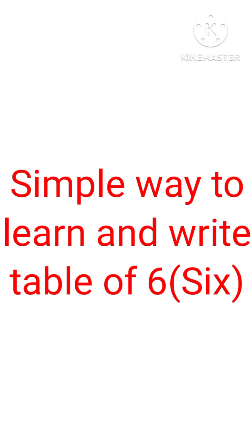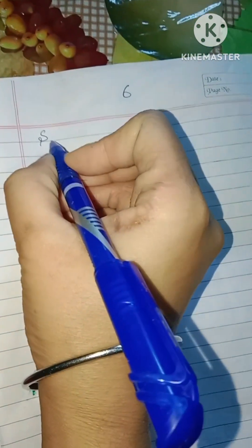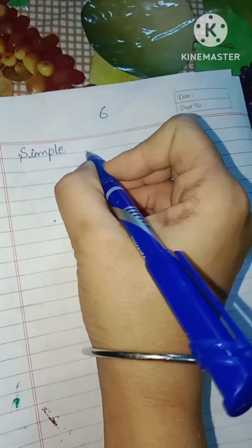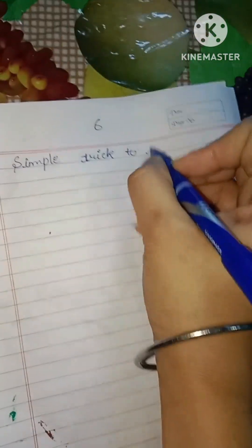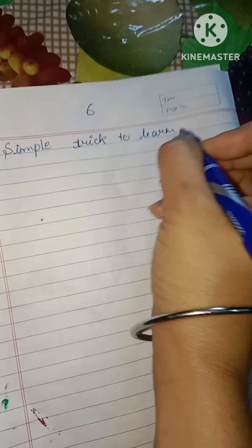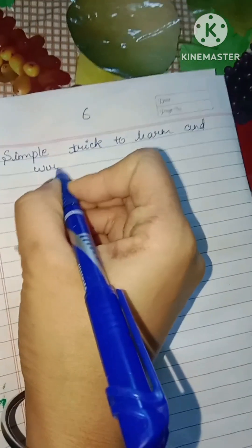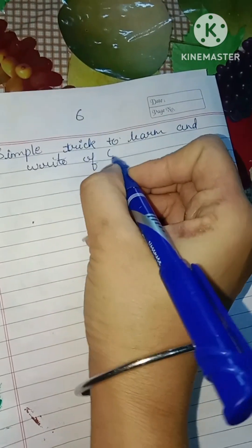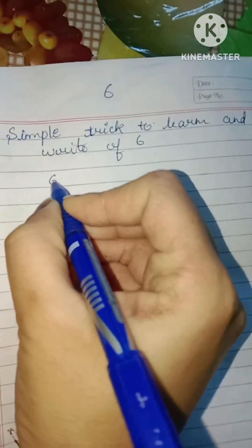Hello everyone, how are you students? Hope you are fine. Today I will tell you a very simple way to learn and write the table of six. As you have seen my previous videos of the table of five and table of two — in the table of two video I told the first step on how you can make your children learn to write tables step by step. Now I am telling you how you can make your children learn the table of six very easily.